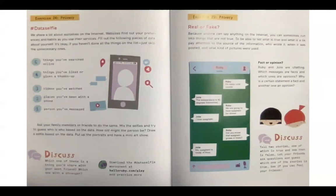Exercise 25. Privacy. Because anyone can say anything on the internet, you can sometimes run into things that aren't true. To be able to tell what is true and what is a lie, pay attention to the source of the information. Who wrote it, when it was posted, and what kind of pictures were used. Fact or opinion. Ruby and Julia are chatting. Which messages are facts and which ones are opinions? Why is a certain statement a fact and another one an opinion?